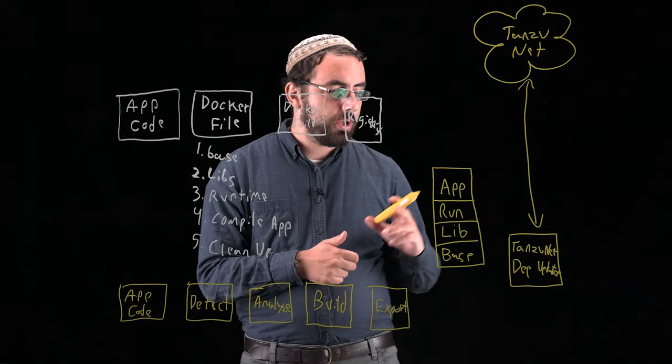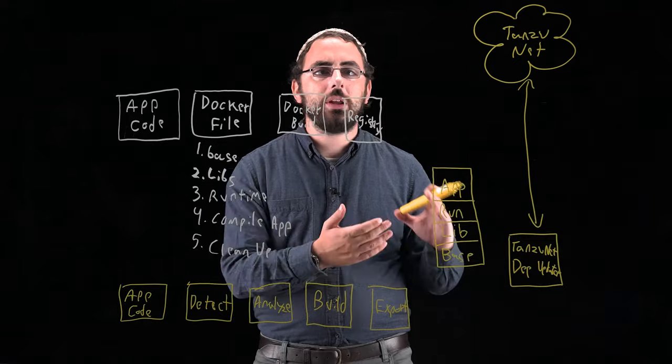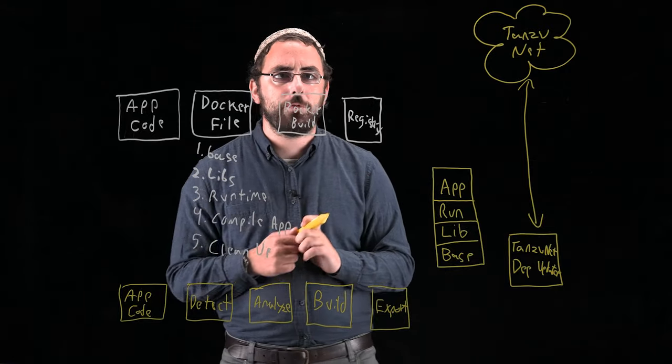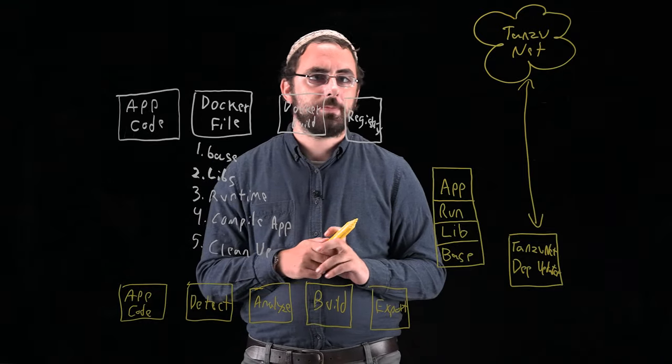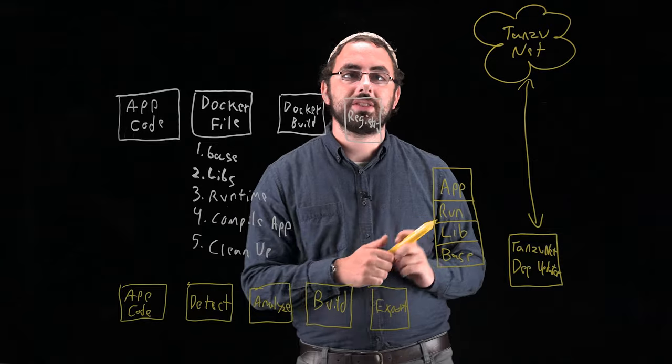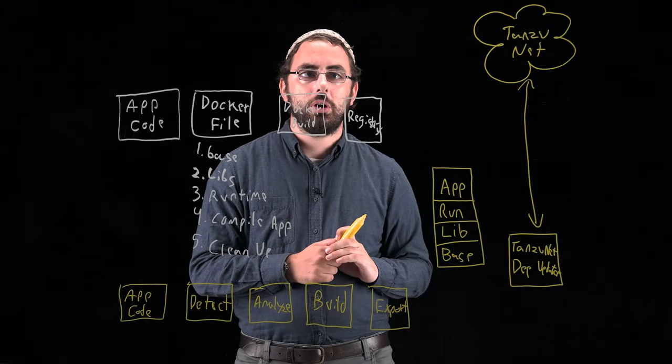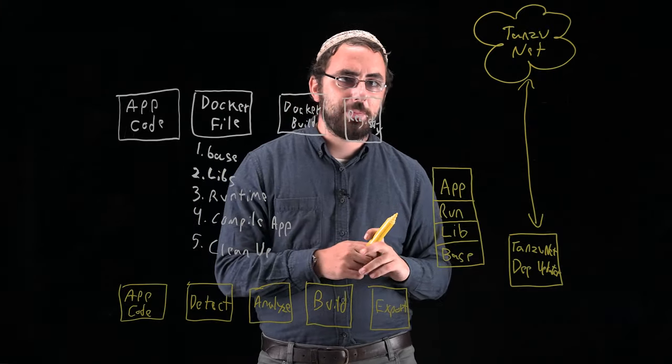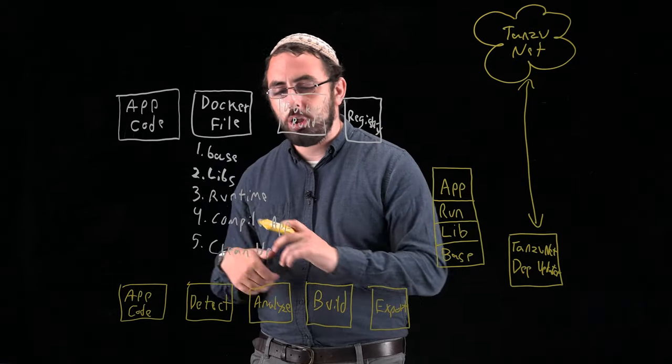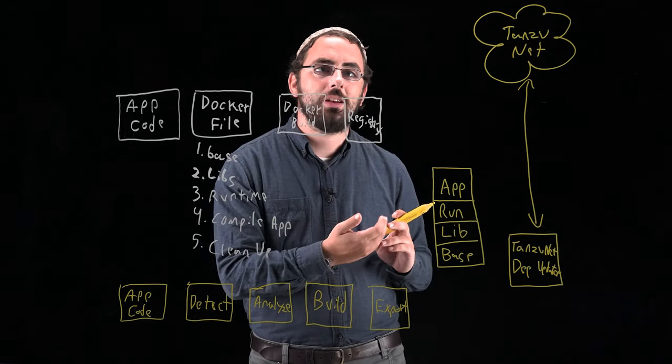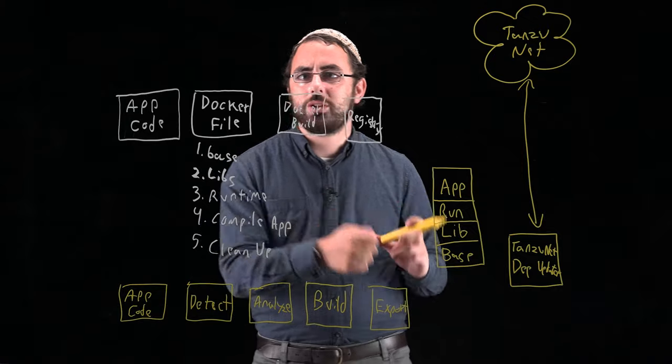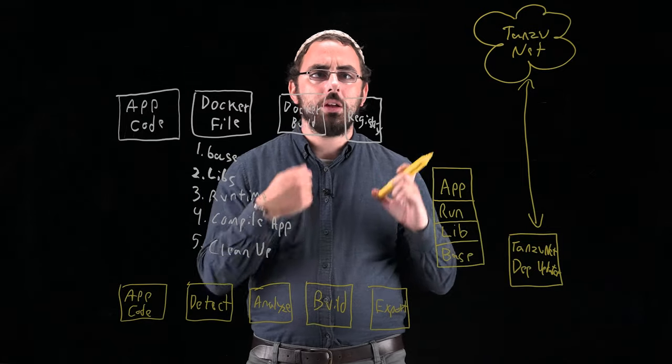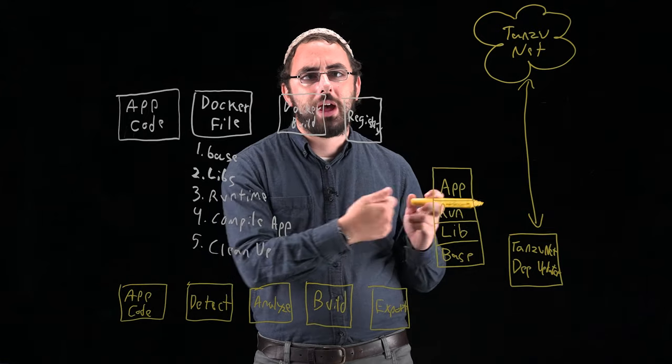If there are any new updates, what the dependency updater is going to do is it's going to let the Tanzu build service mechanism within your environment know that there is a new update for its different dependencies. This could be saying, there is a new base image of Ubuntu Bionic, or there is a new patch version for Spring Boot. When this happens, automatically, all of our images that we have built, whether that's one, ten, or even hundreds of images that use that specific base image or that specific build pack, will automatically be triggered to be updated with that new patched version.